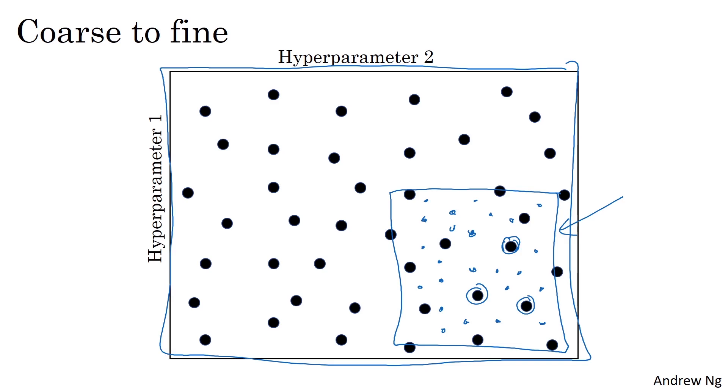And by trying out these different values of the hyperparameters, you can then pick whatever value allows you to do best on your training set objective, or does best on your development sets, or whatever you're trying to optimize in your hyperparameter search process. So I hope this gives you a way to more systematically organize your hyperparameter search process.